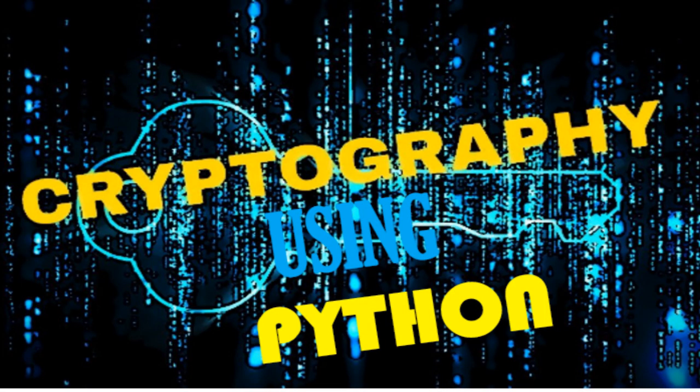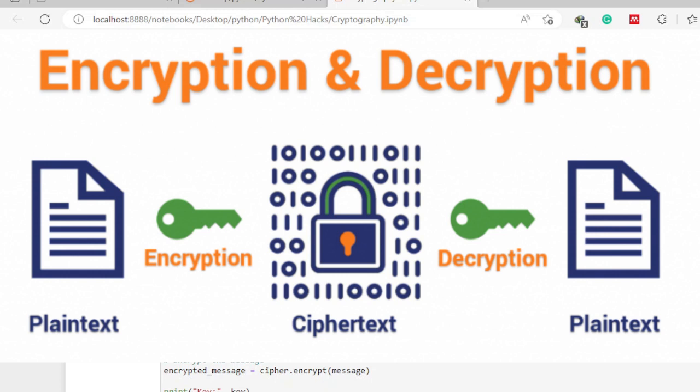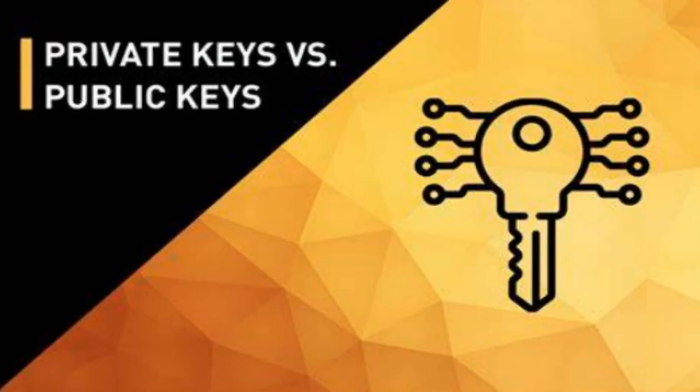Hello and welcome to today's video. We are going to discuss how we can perform cryptography using Python. We are going to do data encryption and data decryption. Encryption means converting data in the form of plain text into cipher text. Decryption, on the other hand, is the reverse — converting cipher text back to plain text.